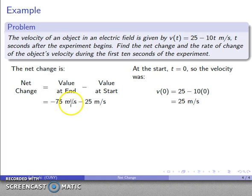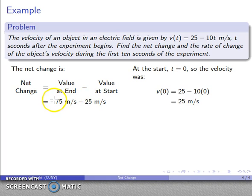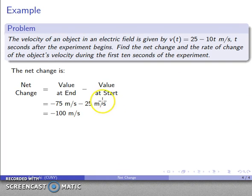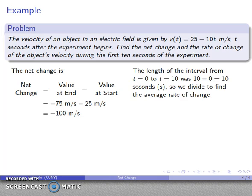The units act just like algebraic variables. Both values are in meters per second — these are like terms with the same variables raised to the same powers. So I can combine the coefficients: negative 75 minus 25 = negative 100, and the units remain meters per second. The net change is negative 100 meters per second. Now to find the average rate of change, I need the length of the interval: from t = 0 to t = 10, that's 10 minus 0 = 10 seconds.